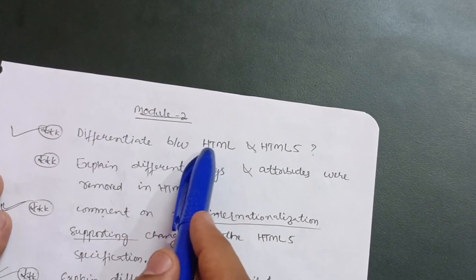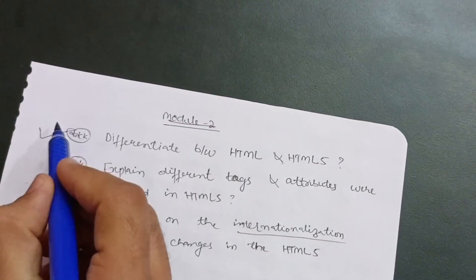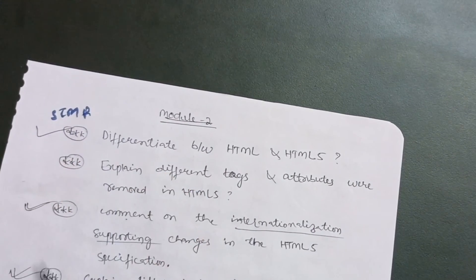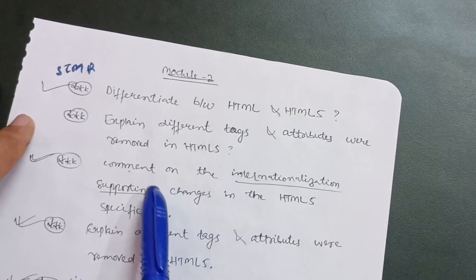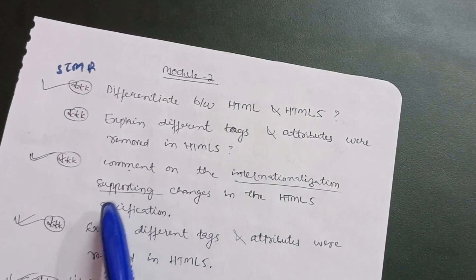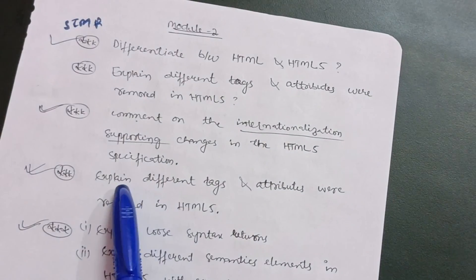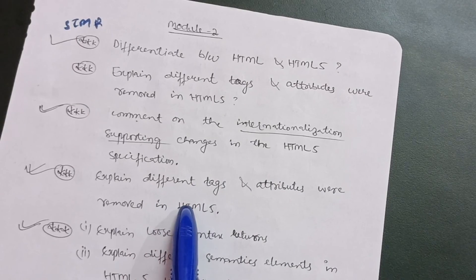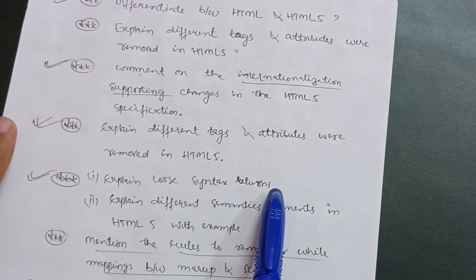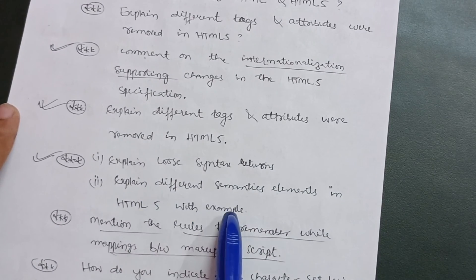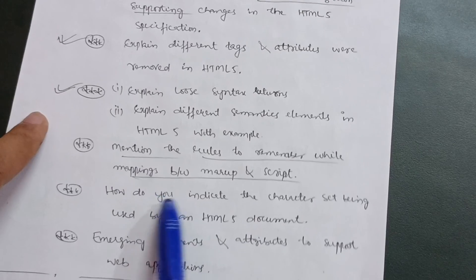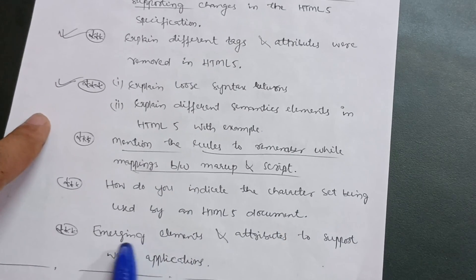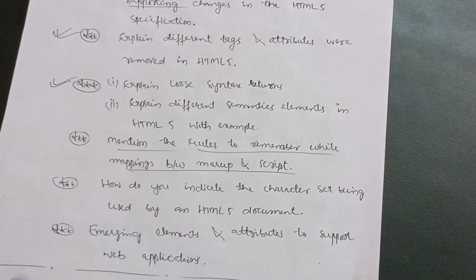Module 2: the super important question is differentiate between HTML and HTML5. Next, explain different tags and attributes that were removed in HTML5, and comment on the internationalization supporting changes in the HTML5 specification. Explain loose syntax rules. Explain different semantic elements in HTML5 with an example, and mention the rules to remember while mapping between markup and script. How do you indicate the character set used by an HTML5 document? Also cover emerging elements and attributes to support web applications.